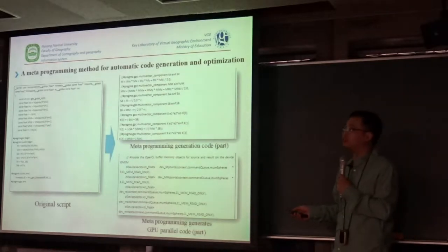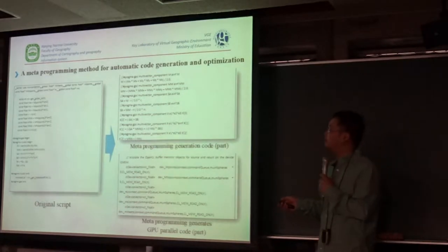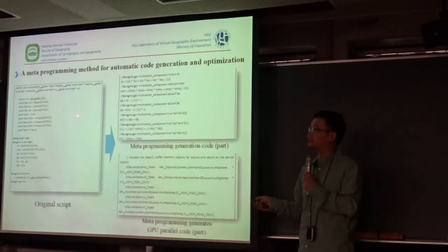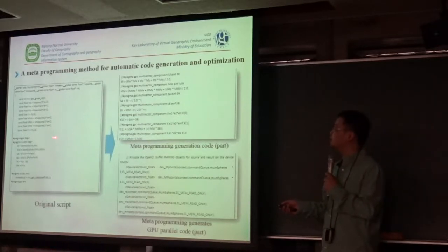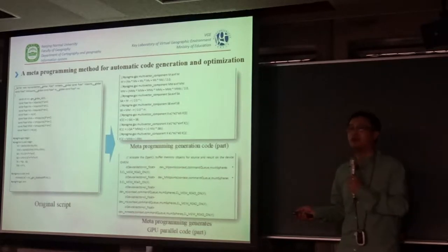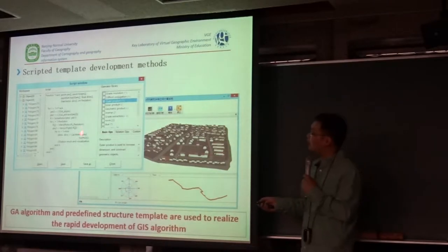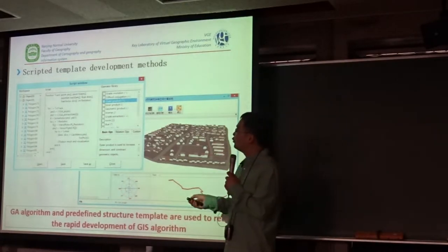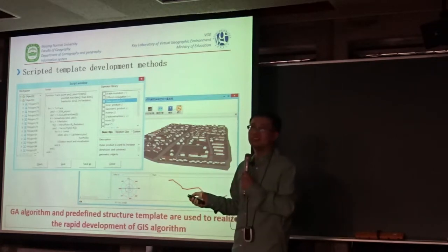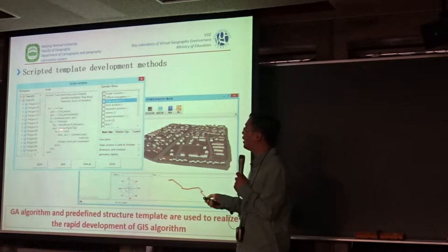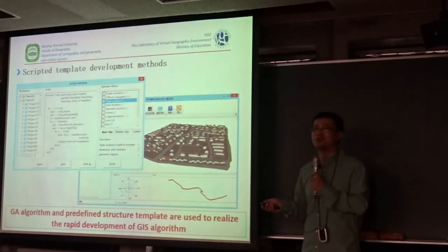Developed by Dr. Helden-Brand, the Gallup software can translate the GA-based operator script into high-performance computational code. You can just select the objects you want to compute, select the operators you want to operate, and then you will have the computational codes.